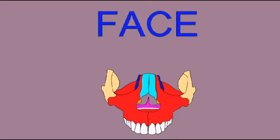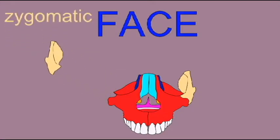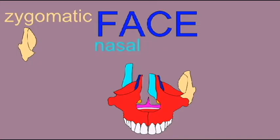The nasal bone, which composes the bridge of the nose — the rest is cartilage. The small lacrimal bone on the medial aspect of the orbit, containing the lacrimal canal, or the tear duct.